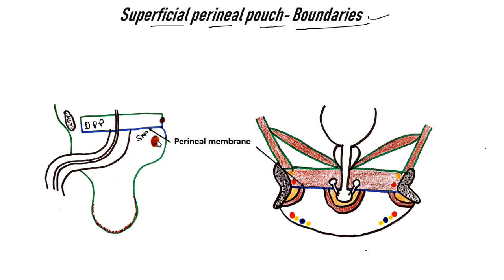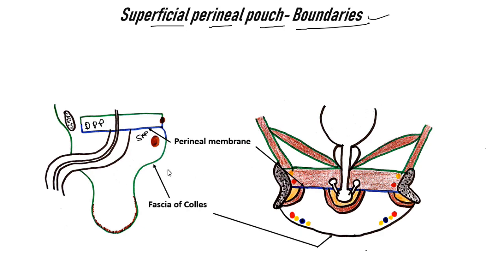Above, the superficial perineal pouch is bounded by the perineal membrane on both sides. And below it is bounded by the fascia of Colles, or Colles' fascia.